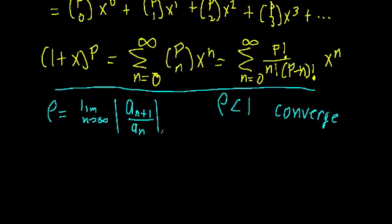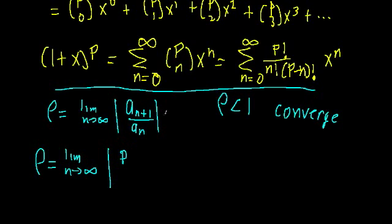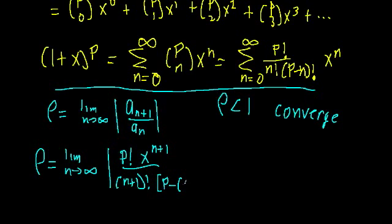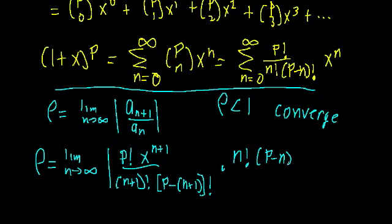Plugging in, rho equals the limit as n approaches infinity of: the (n+1) term, which is p factorial times x to the (n+1) over (n+1) factorial times (p minus (n+1)) factorial, divided by the n-th term. We multiply by the inverse of the n-th term, giving n factorial times (p minus n) factorial over p factorial times x to the n — all in absolute value.